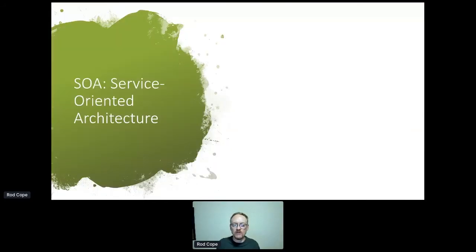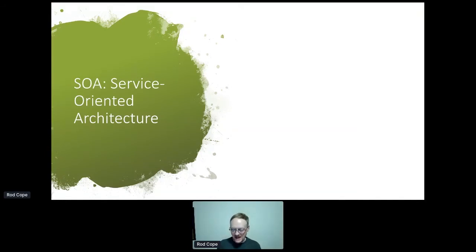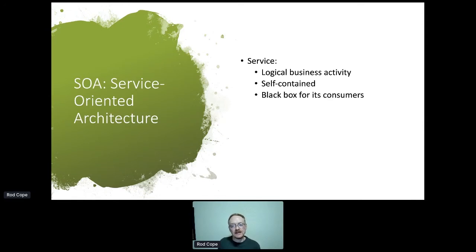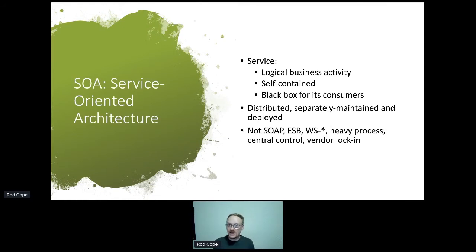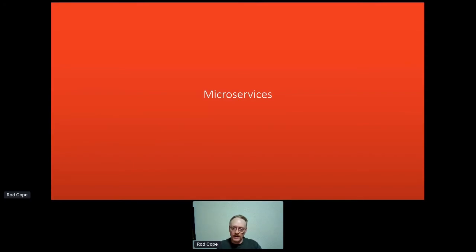Before we look at microservices and mini services, let's look at what services are. It all started with SOA — service-oriented architecture. It has a bad name, but the intent was always: it's a service, a self-contained black box, a business activity — what we think of as the best kind of use of APIs today. Distributed, separately maintained and deployed, independent. It wasn't originally about SOAP, ESBs, WS-*, and heavy process — it turned into that, becoming a big, hairy, nasty mess. But that's not the original intent of SOA, and I think it's making a bit of a comeback.